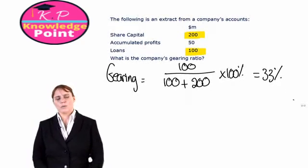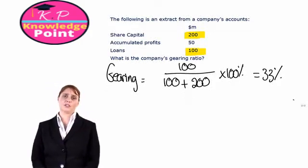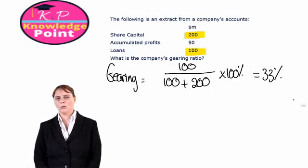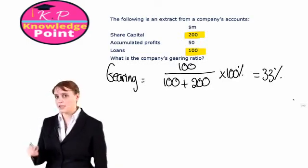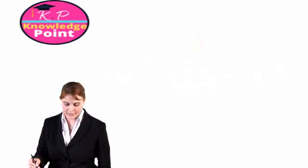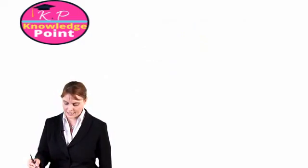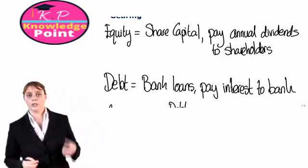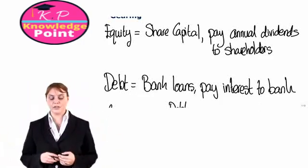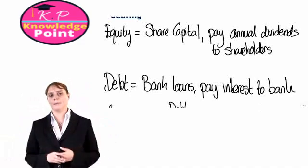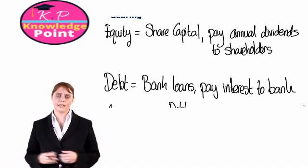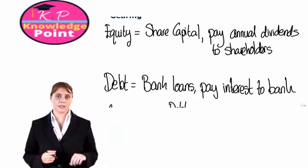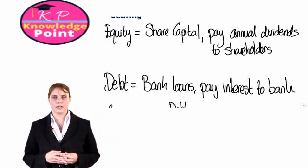So what is this telling us? Why do we care what percentage of the company's financing is debt financing? Does it matter? Well, yes it does. Let's look back at what we said about equity and debt financing. With equity, we sell shares to a number of different individuals and then we pay them annual dividends as a return on what they have invested. With debt, the bank gives us a large sum of money and we pay interest on the loan.